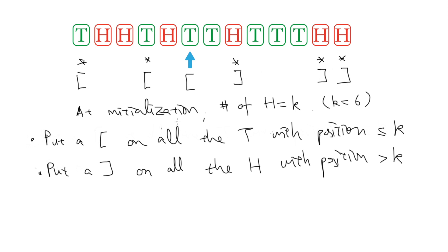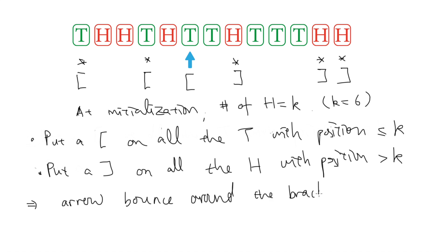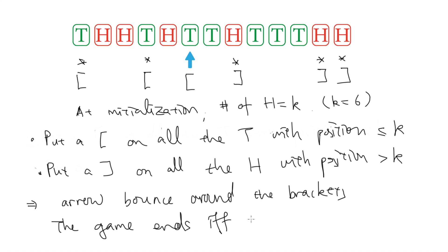So here, here and here. Now we can think of the problem as an arrow bouncing around the brackets. And we want to move to the zero position, which means that we need to have as many left brackets as the number of right brackets. And this is what I am going to show next: the number of left brackets equals the number of right brackets.